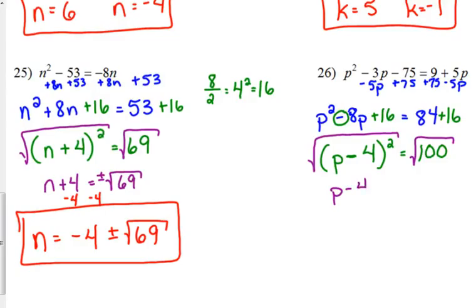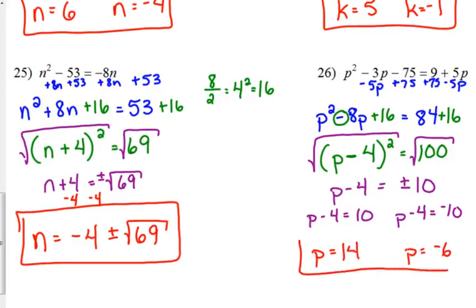Take the square root. P minus 4 is equal to, well, 100 is a perfect square. So, plus or minus 10. So, we can actually solve this one all the way out. Set P minus 4 equal to positive 10 and negative 10. So, one solution is 14. The other solution is negative 6.